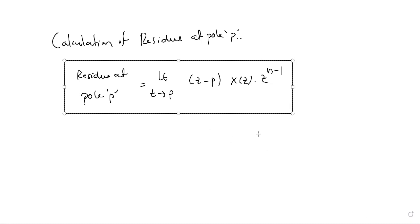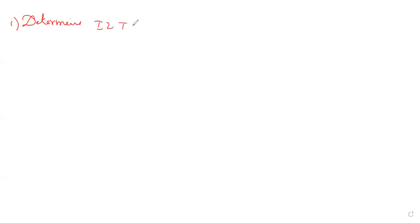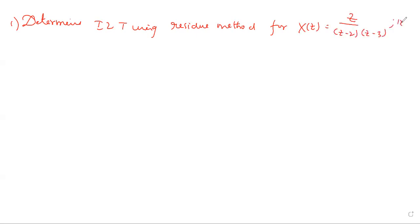You just need to remember this formula for residue at pole p. Write the theoretical part first, then go for the procedure by solving the problem. Let us see one example. Determine the inverse Z-transform using the residue method for X of Z equal to Z divided by the quantity Z minus 2 times Z minus 3, given that mod Z is less than 2. How many poles do we have here? Two: at Z equal to 2 and Z equal to 3.